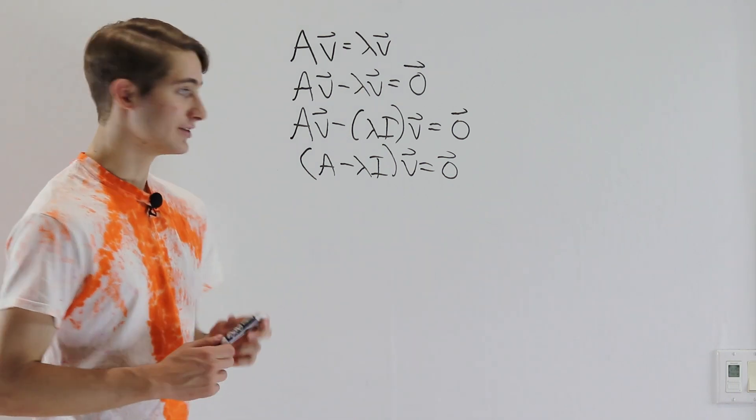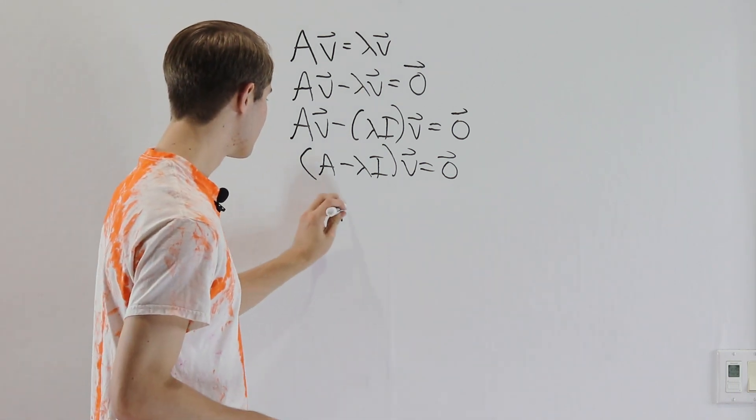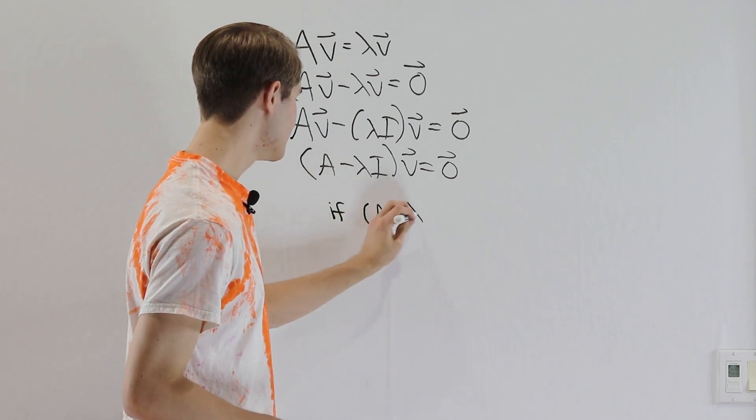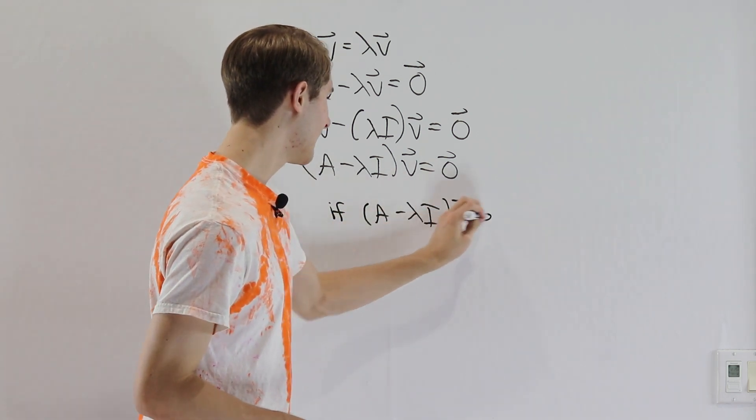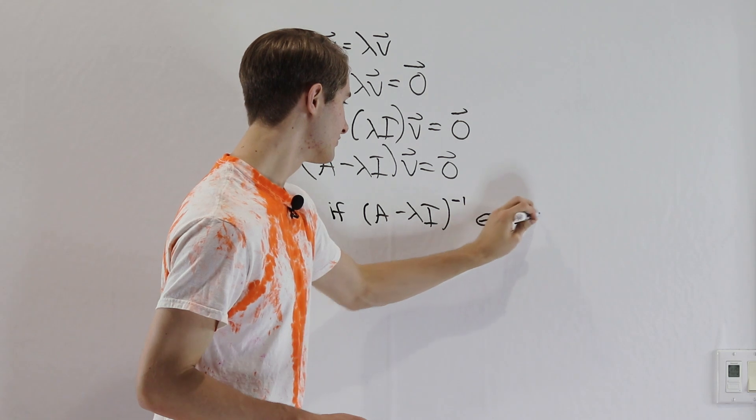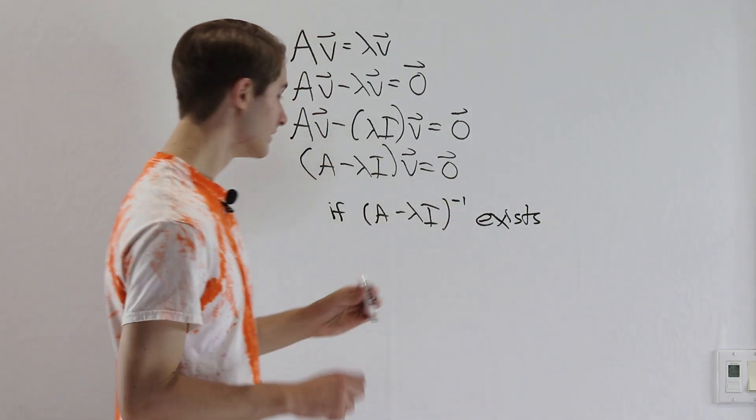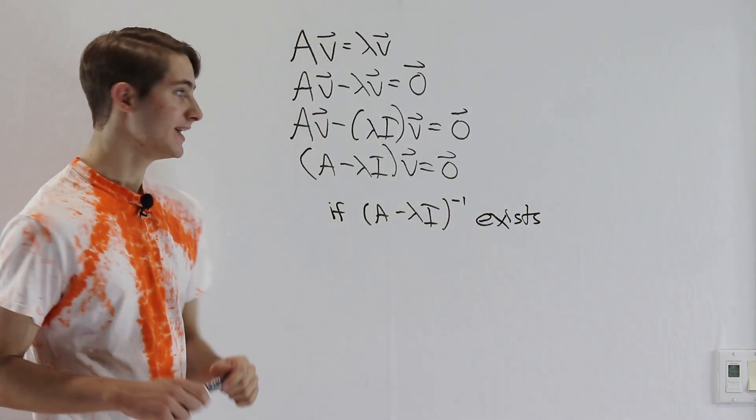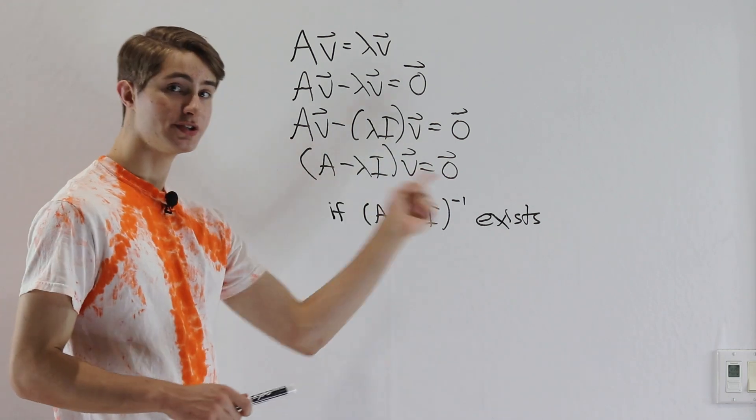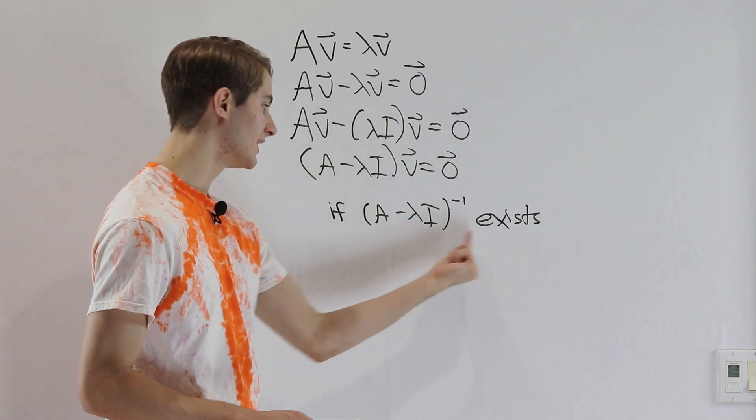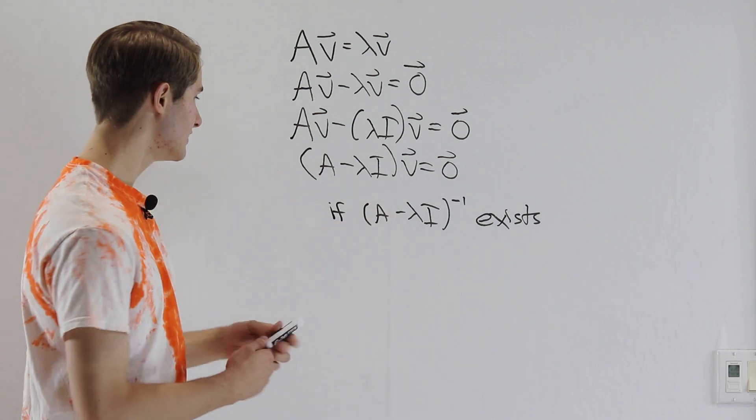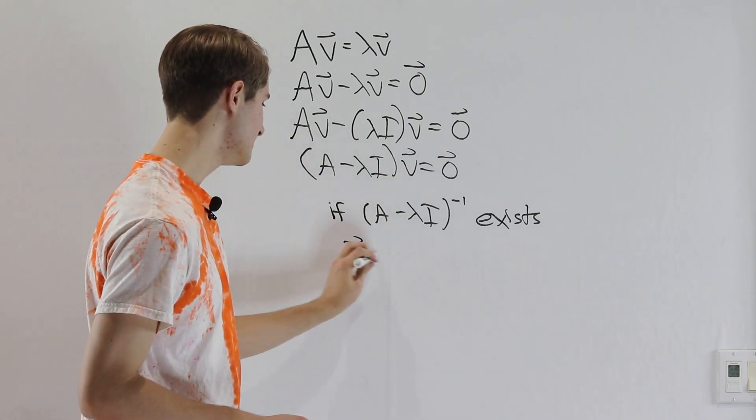Now, I want to consider the following. Let's think about what would happen if the matrix A minus lambda I had an inverse, if its inverse exists. One thing that we could do in that case is multiply both sides of this equation by A minus lambda I inverse. So on the left side, the inverse and the matrix would cancel out, we would just get V.